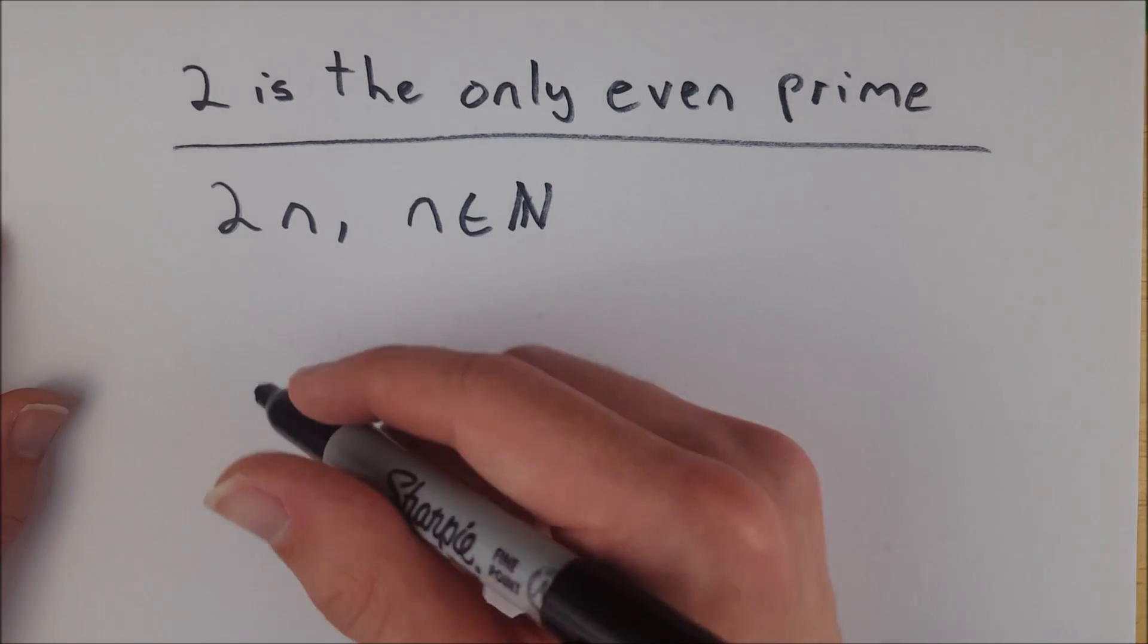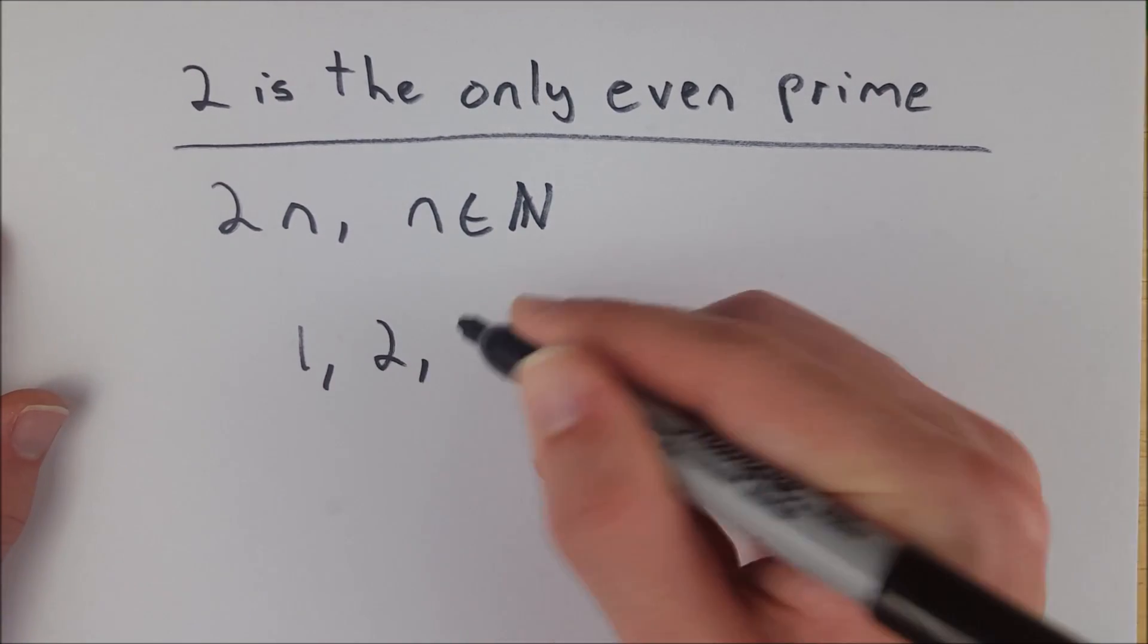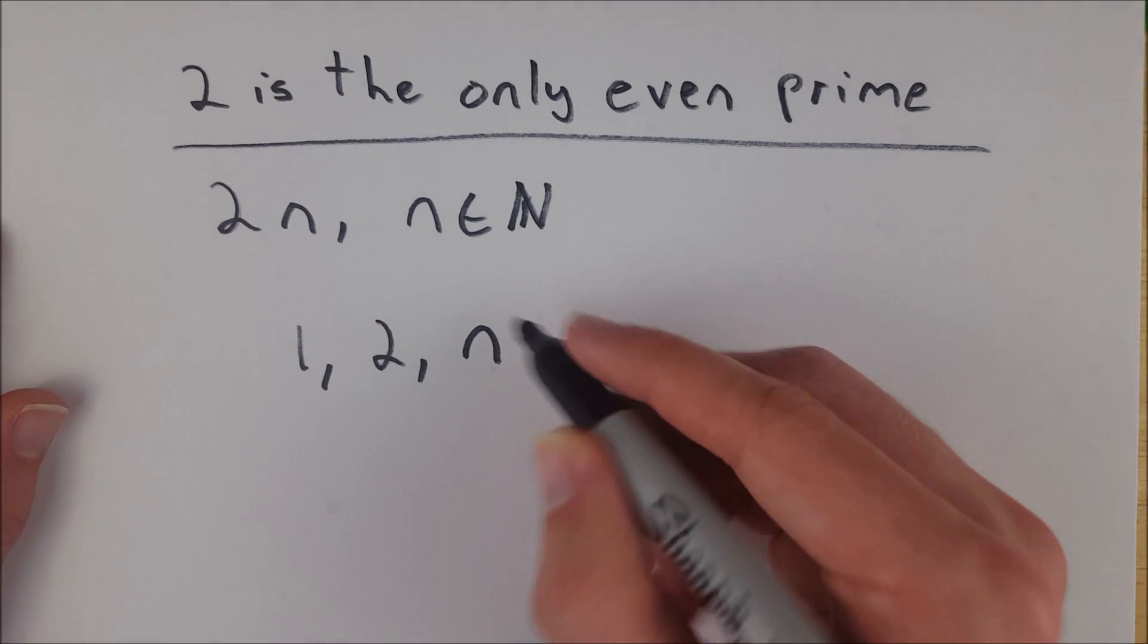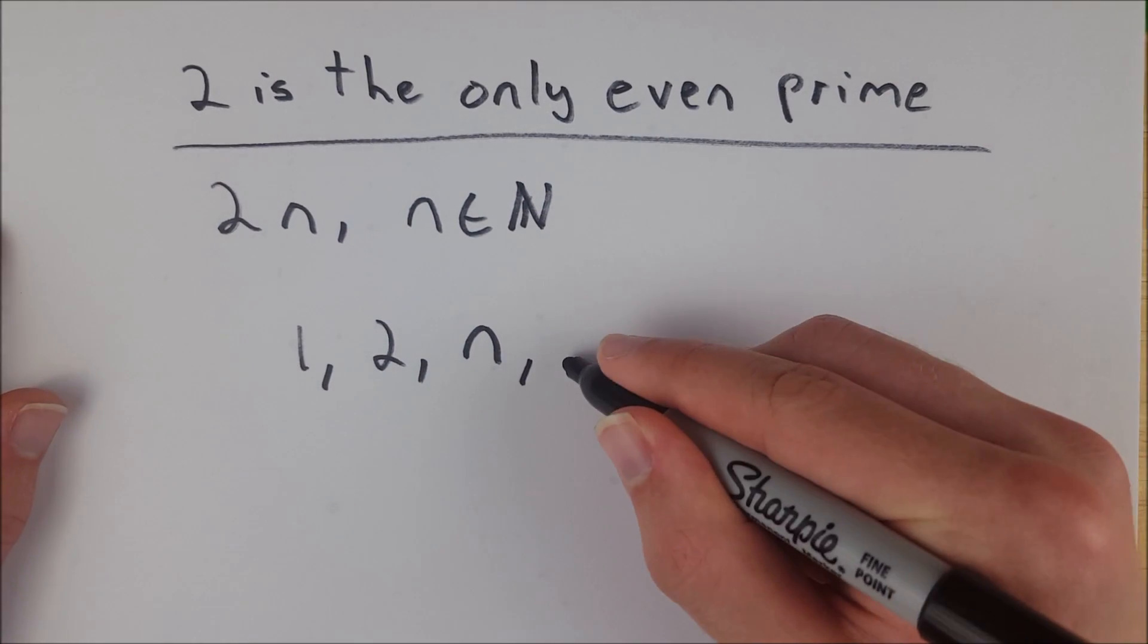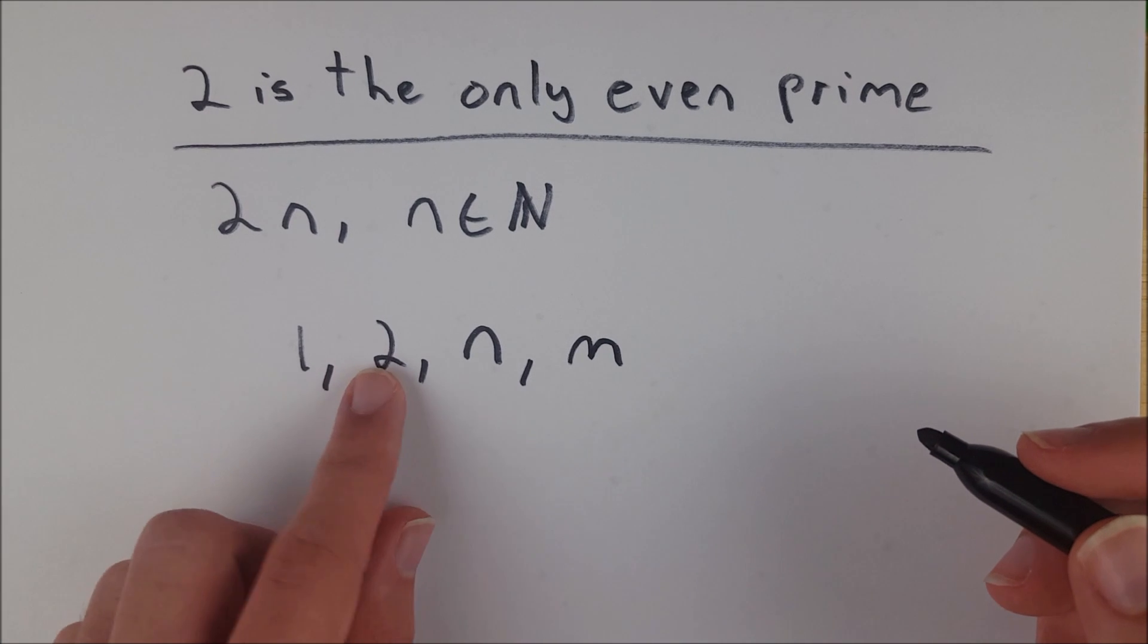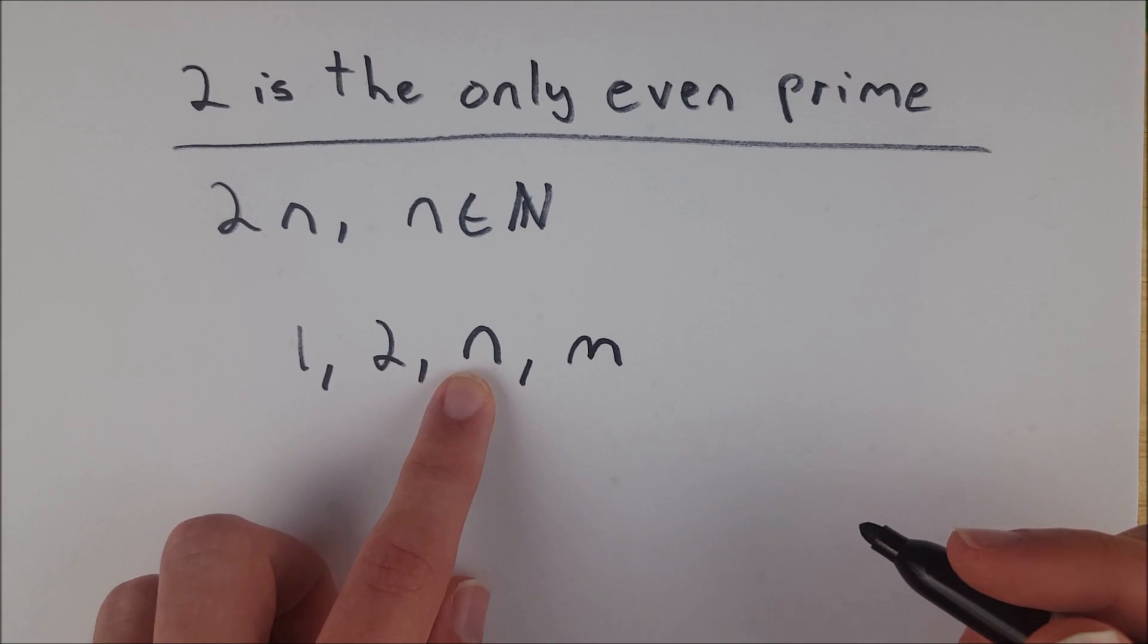And the three divisors will be 1, 2, and n. And then we also know that it may or may not have some other divisor, we'll call it m, because some number times 2 has to give you n.